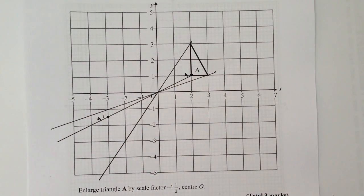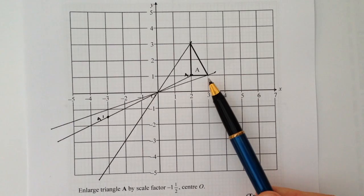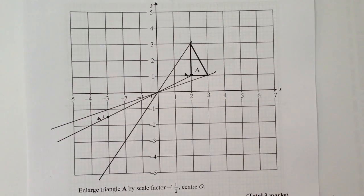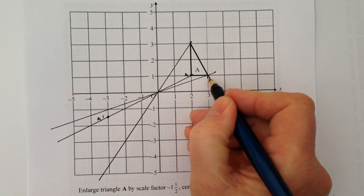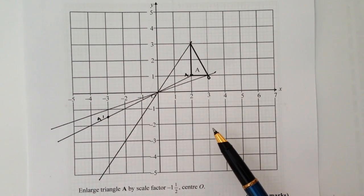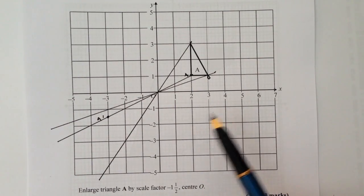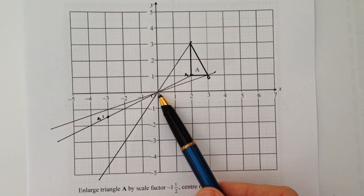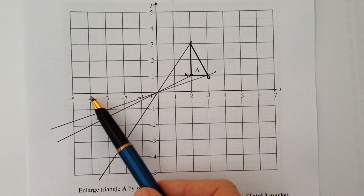Okay, so the next thing is that I'm going to look at point B which is this point here. Now that's along three and up one. Well, three times one and a half is four and a half, so I'm going to go along four and a half.